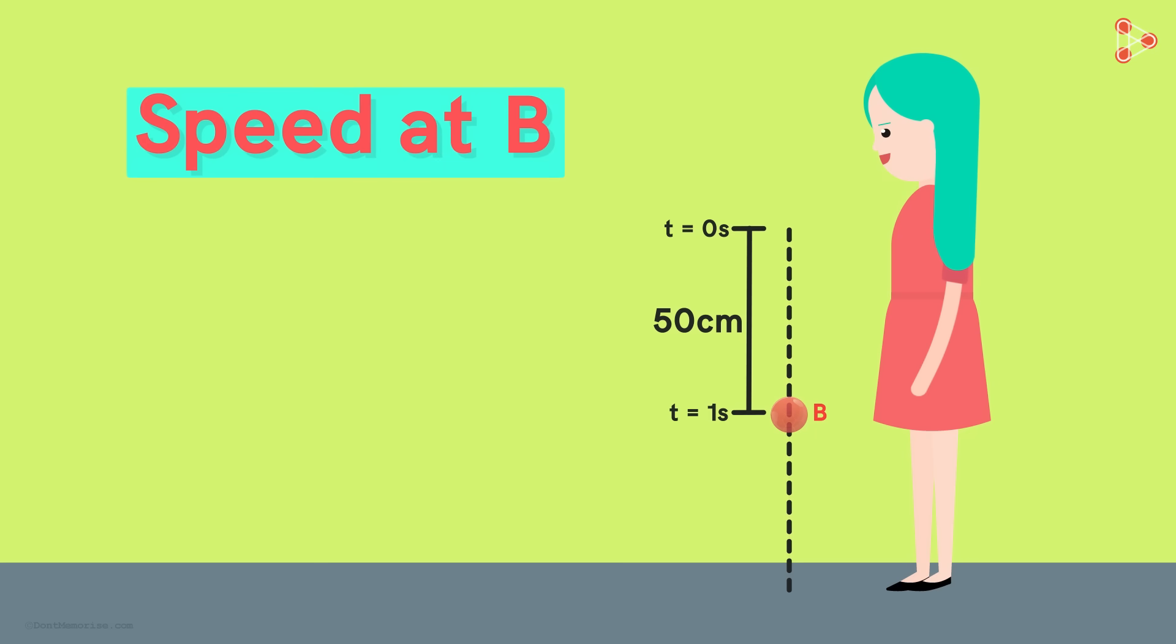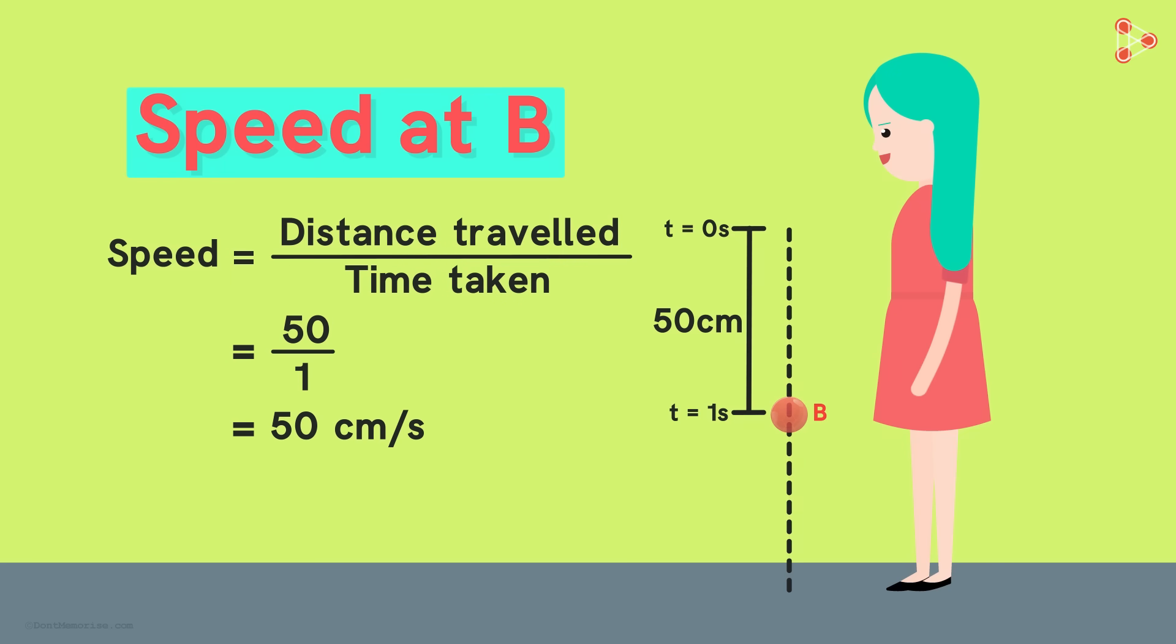Like you would probably be thinking, Nora also thinks the speed of the ball will be the distance travelled by it divided by the time taken to reach that point. So she comes up with the answer: 50 centimeters per second or 0.5 meters per second.